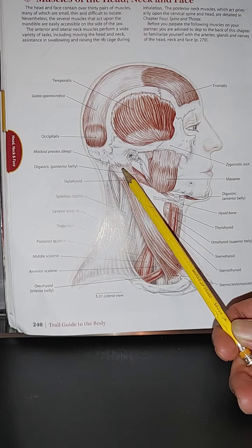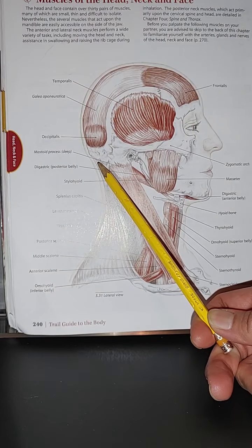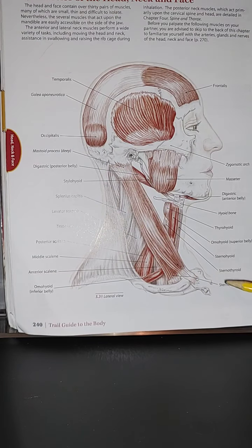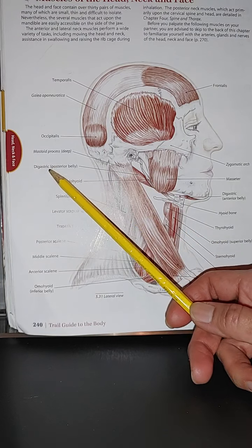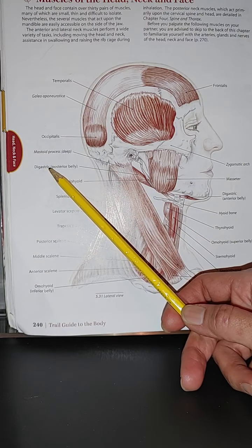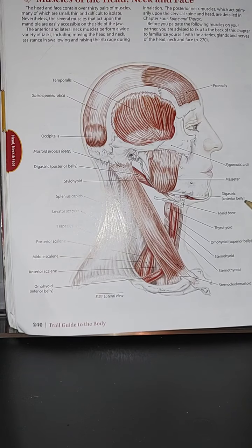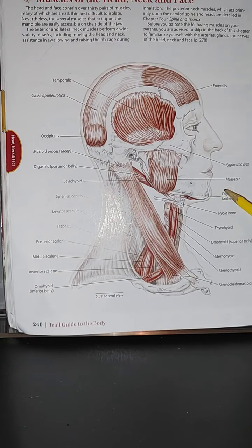We have that mastoid process. That is the sternocleidomastoid insertion. And we do have the digastric. We do have the posterior belly, because we do know that we also have the anterior belly portion of digastric.